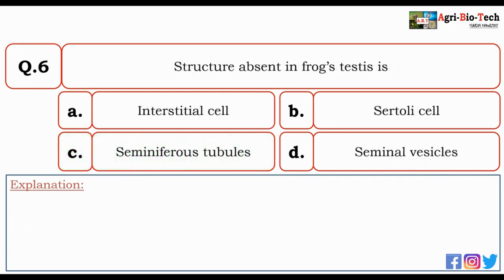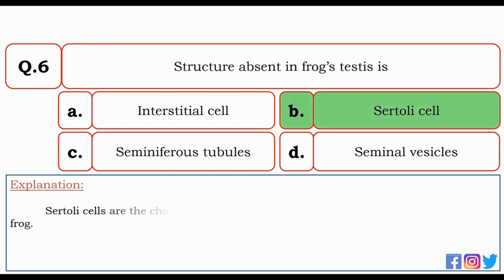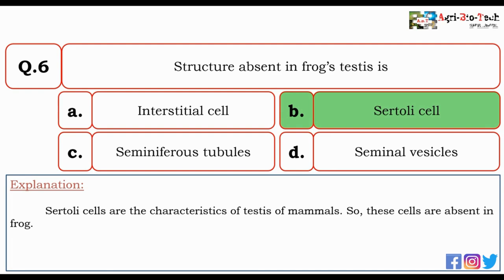Next question: structure absent in frog's testes is — interstitial cells, Sertoli cells, seminiferous tubules, or seminal vesicles? The correct option is B — Sertoli cells. Sertoli cells are characteristic of the testes of mammals, so these cells are absent in frogs.